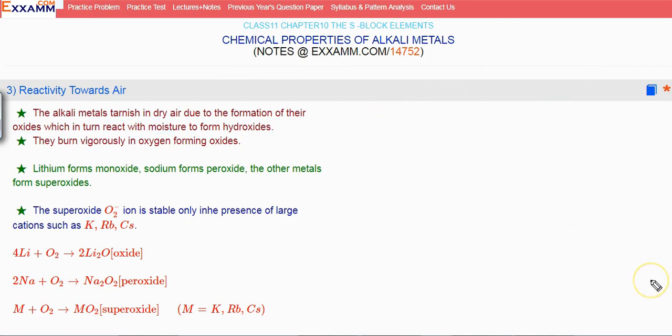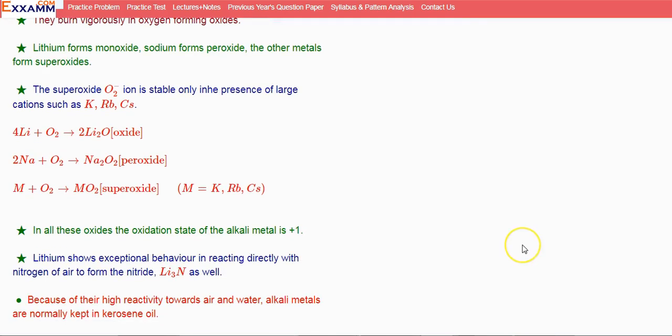So in all these oxides, the oxidation state of the alkali metal is plus one. In all cases, the alkali metal has a plus one oxidation state.